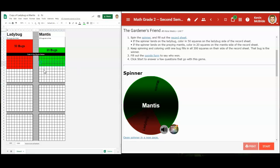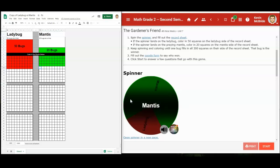20 every time for the mantis and 50 for the ladybugs. I've hit the mantis three times in a row and that kind of makes sense because there's three times as much space for the mantis here as there is for the ladybug. But of course the ladybug gets 50 every time.